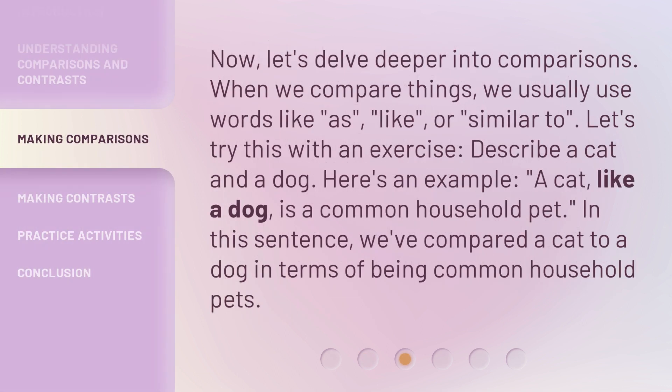Now, let's delve deeper into comparisons. When we compare things, we usually use words like 'as,' 'like,' or 'similar to.' Let's try this with an exercise. Describe a cat and a dog. Here's an example: 'A cat, like a dog, is a common household pet.' In this sentence, we've compared a cat to a dog in terms of being common household pets.